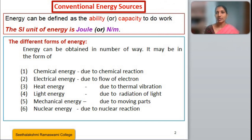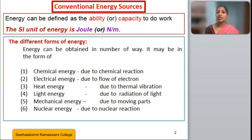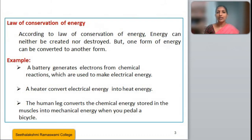There are different forms of energy. The basic energy we know is potential energy and kinetic energy. There are also many other forms: chemical energy is due to chemical reactions, electrical energy is obtained due to the flow of electrons, heat energy is due to thermal vibrations, light energy is due to the radiation of light, mechanical energy is due to the moving parts of machines, and nuclear energy is due to nuclear reactions.